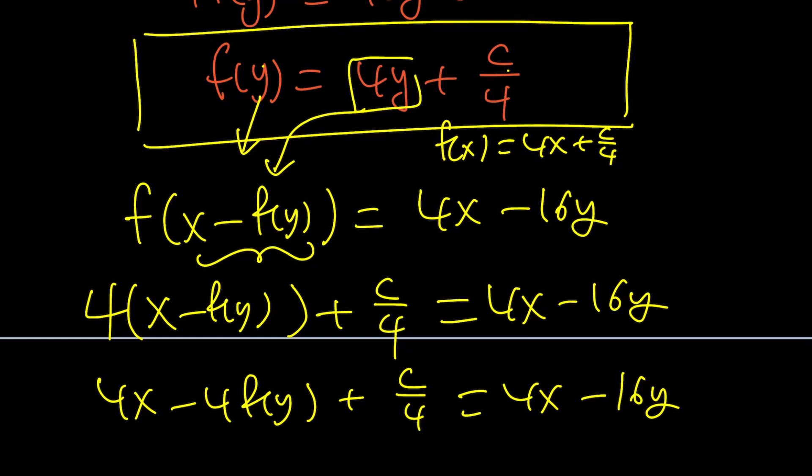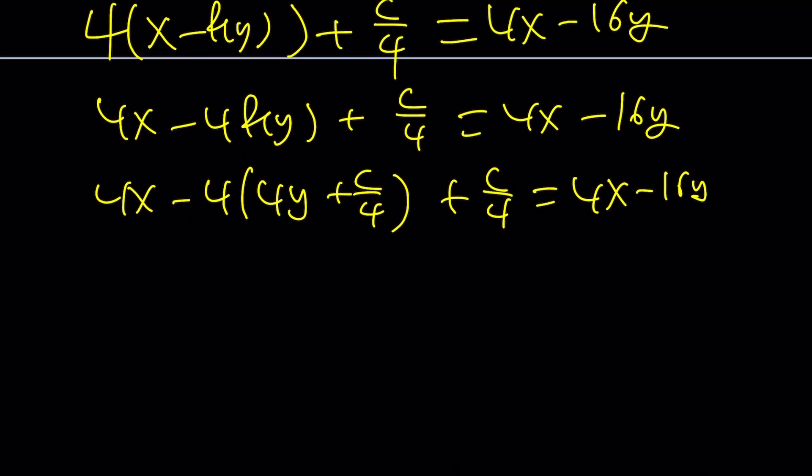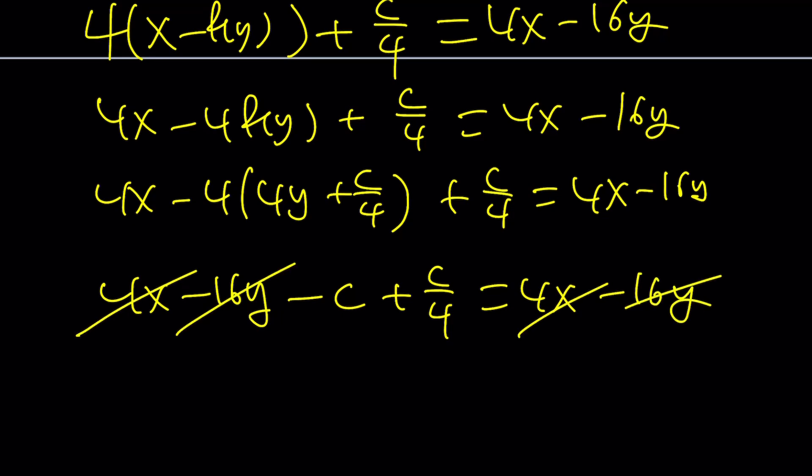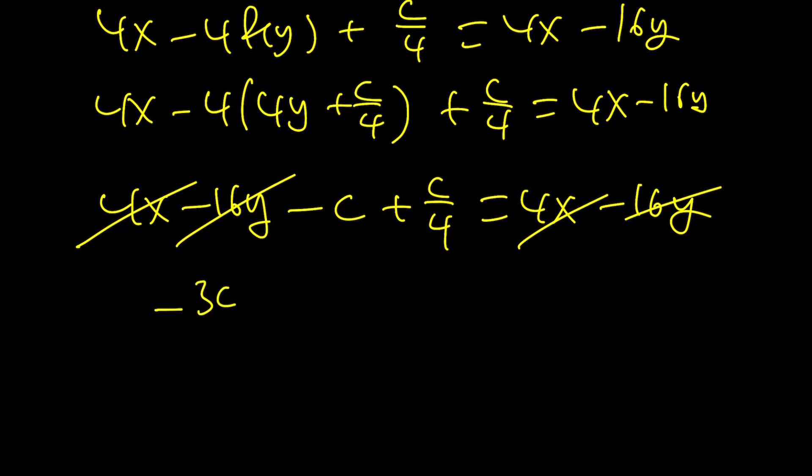Now, let's go ahead and replace f(y) with 4y + c/4. And, then, plus another c/4 = 4x - 16y. Now, let's go ahead and simplify this a little bit. 4x - 16y - c + c/4 = 4x - 16y. Now, it's good that 4x - 16y cancels out. And, we end up with -c/4 = 0, which implies c = 0. Great.